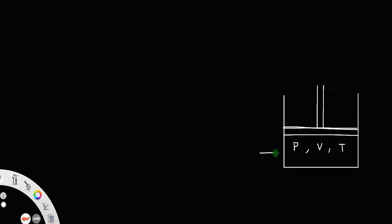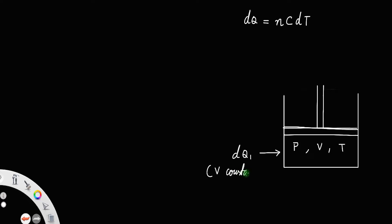Let dq1 be the heat supplied to this system. We know heat supplied to a system is equal to n·c·dT, where n is the number of moles, c the molar specific heat capacity, and dT the increase in temperature. Suppose the heat dq1 is applied such that the volume does not change — the volume remains constant. Then we have dq1 = n·Cv·dT, where Cv is the molar specific heat capacity at constant volume.